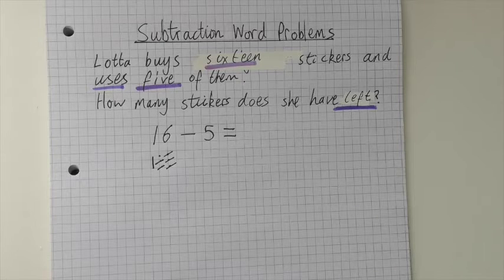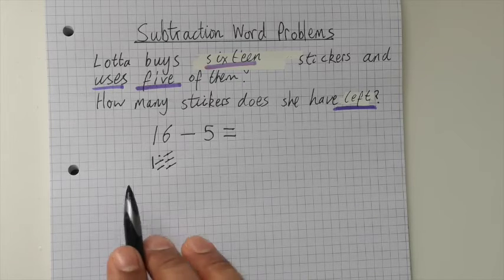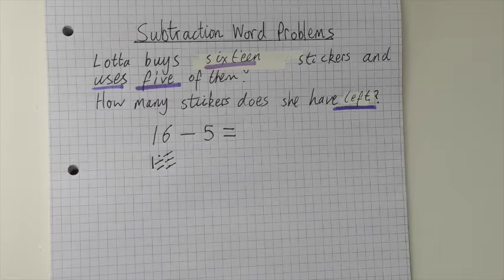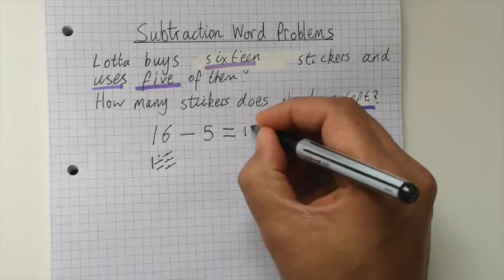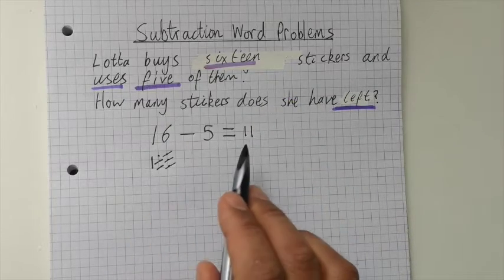And now the final step with subtraction is to count what's left. Count with me: I've got 10, 11. Make sure you don't count the things you've crossed out. So now I know 16 take away 5 equals 11.